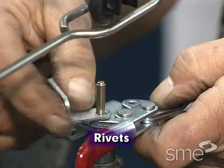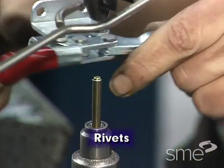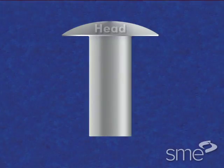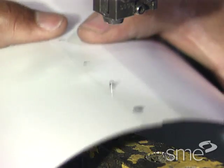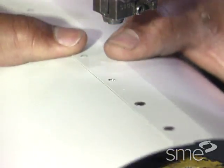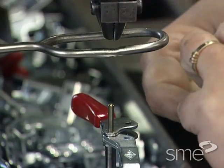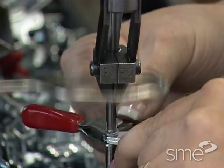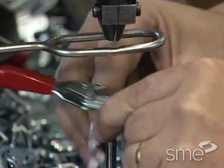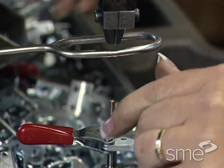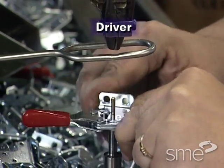A rivet is a one-piece unthreaded permanent mechanical fastener consisting of a head and a body. Rivets are used for fastening two or more components together by passing the body through a hole in each piece and then quickly clinching or forming a second head on the body end by impact between a driver and a die.